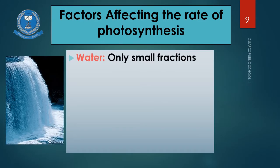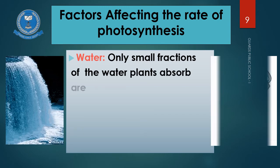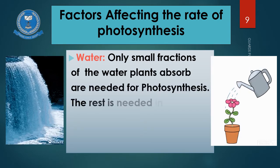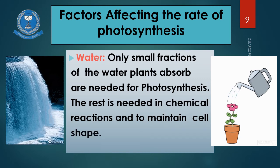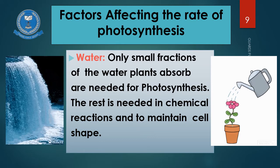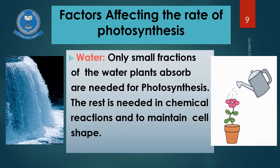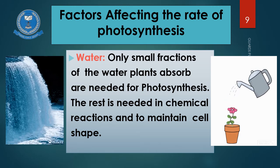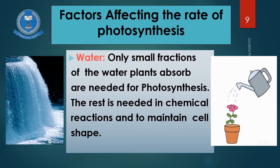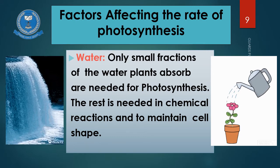Water. Only a small fraction of the water plants absorb is needed for photosynthesis. The rest is needed in chemical reactions and to maintain cell shape. Photosynthesis ke liye paani plant ko bahut zyada nahi chahiye hota, lekin water bahut important hai plant ke liye kyunki chemical reactions ke liye paani chahiye hota hai, aur cell ki shape ko maintain karne ke liye bhi plant ko water chahiye hota hai. Lekin agar plant ko apni requirement se kam water milega to plant wilt hone start ho jaayega, aur jab plant wilt hone start hoga to photosynthesis ka rate normal rate se half ho jaayega.